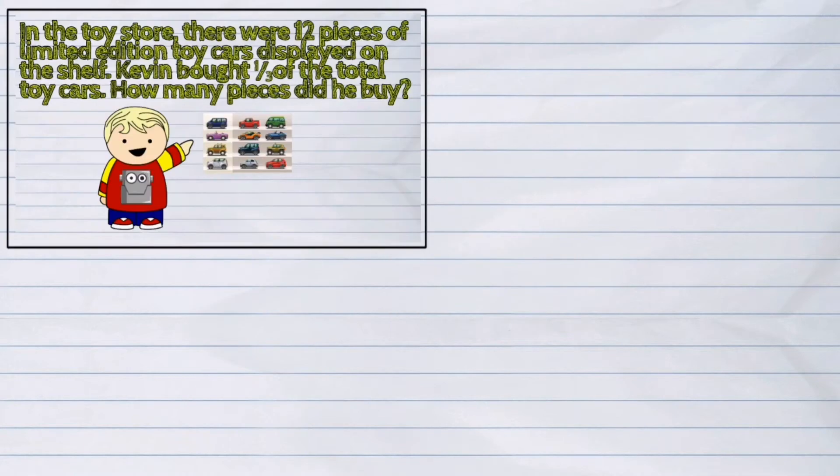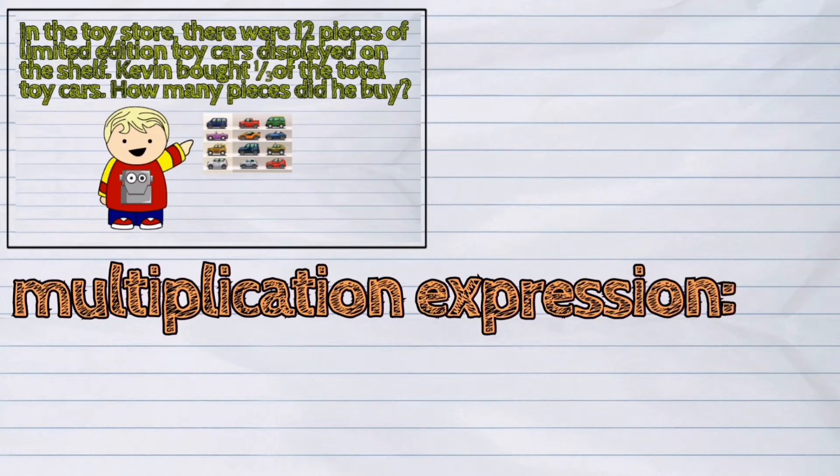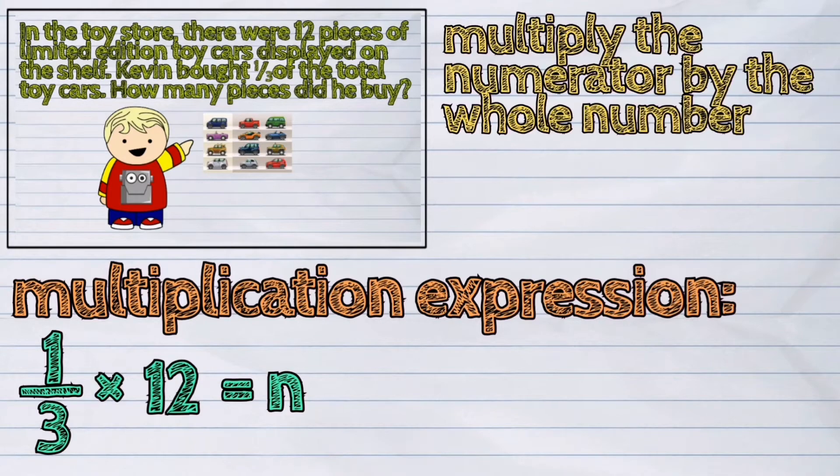The first step is to write the multiplication expression. So, it's one-third times 12. Next, multiply the numerator by the whole number. Our numerator is 1 and our whole number is 12. So, it's 1 times 12. This is equal to 12.